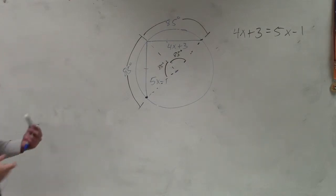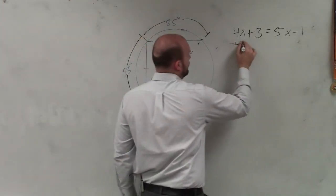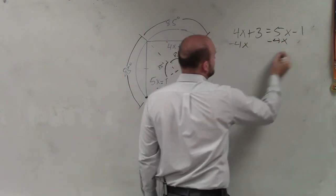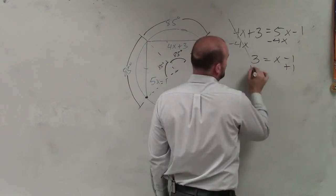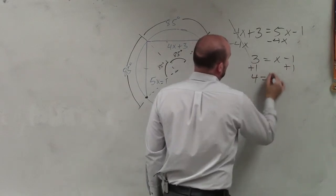Now I just need to use algebra to solve for x. So what I'll do is I'll subtract 4x on both sides by using the subtraction property of equality. 3 equals x minus 1, add 1, add 1, 4 equals x.